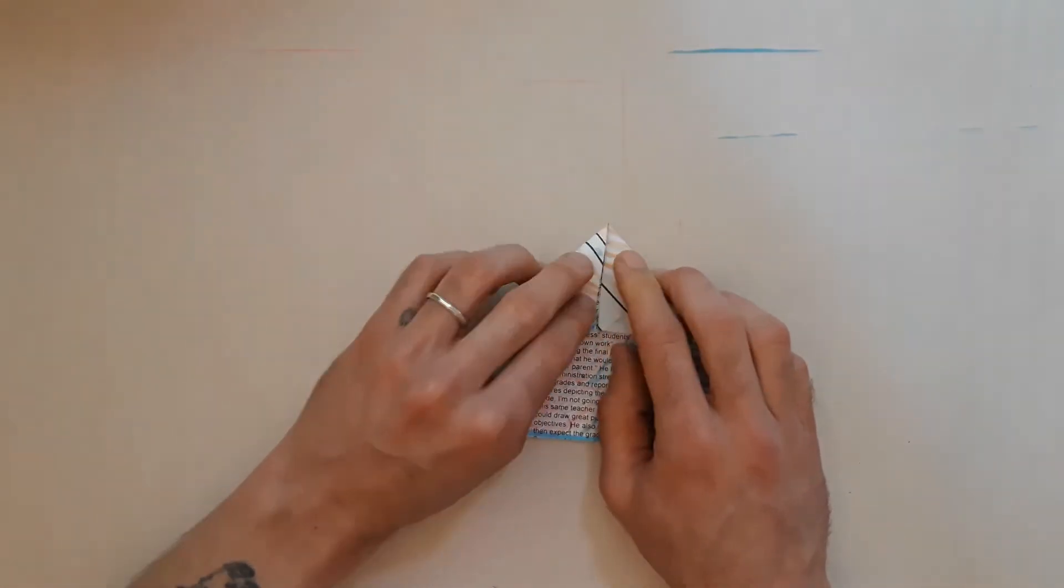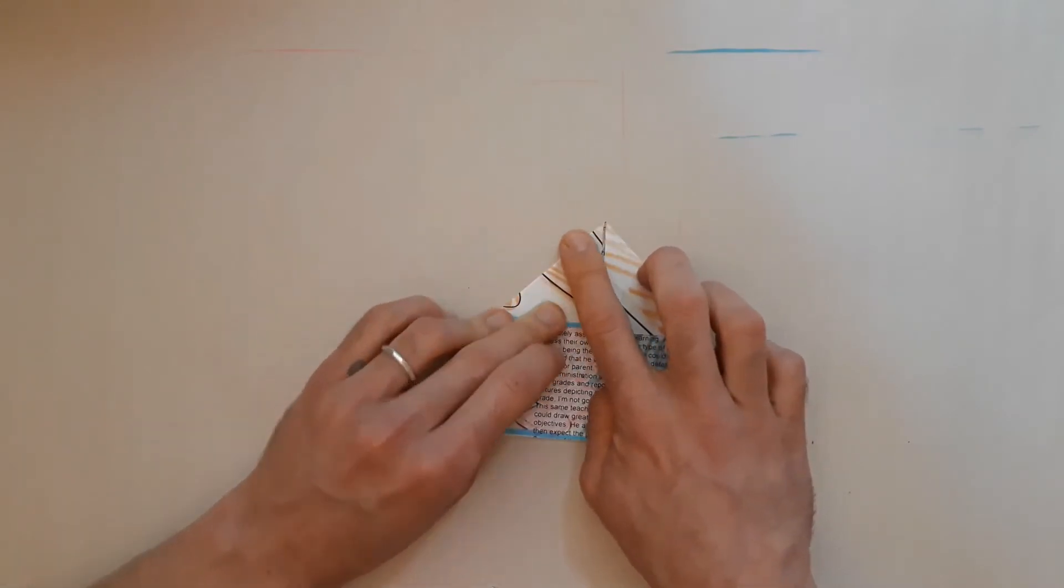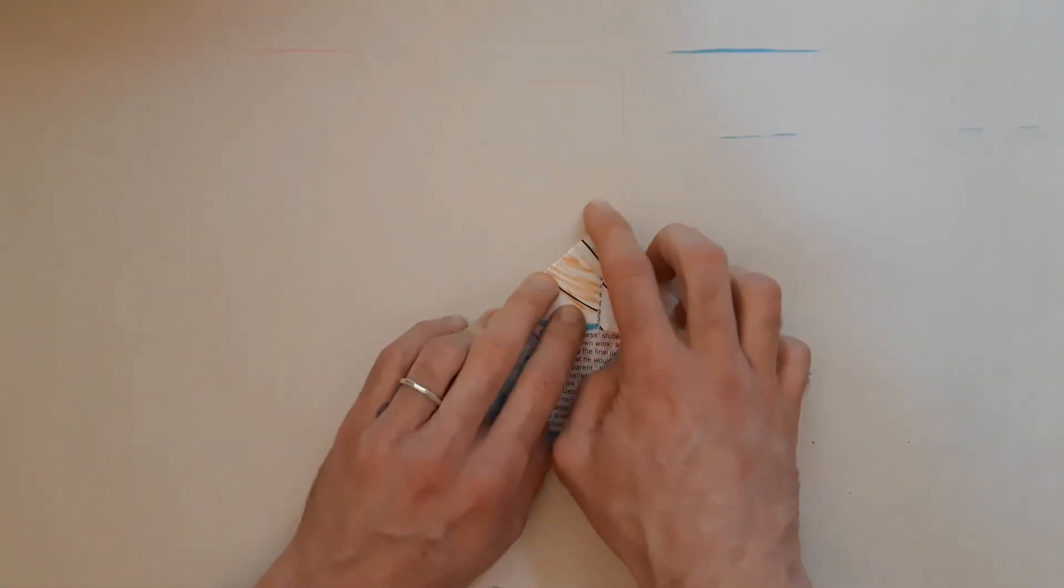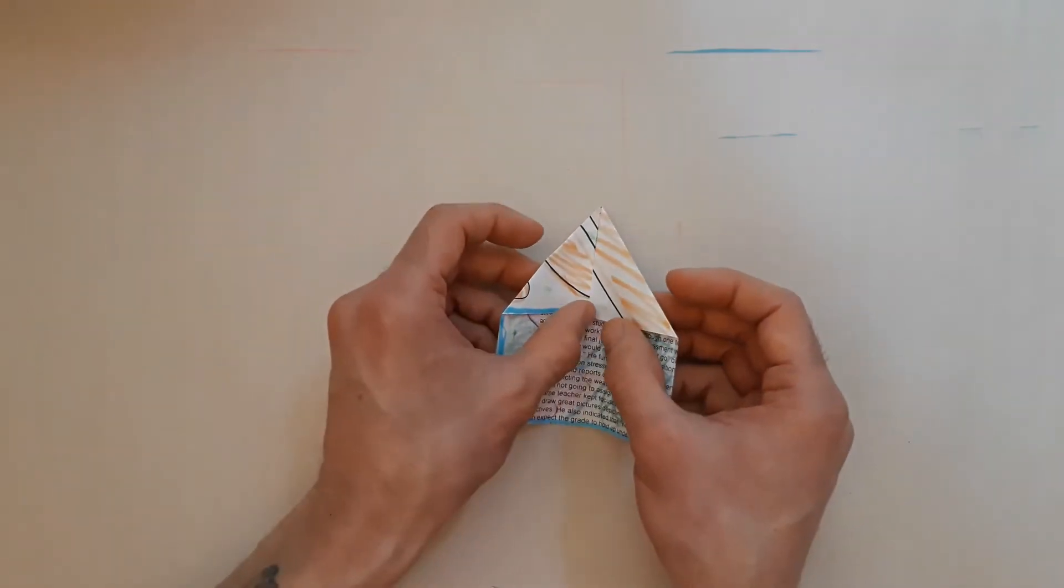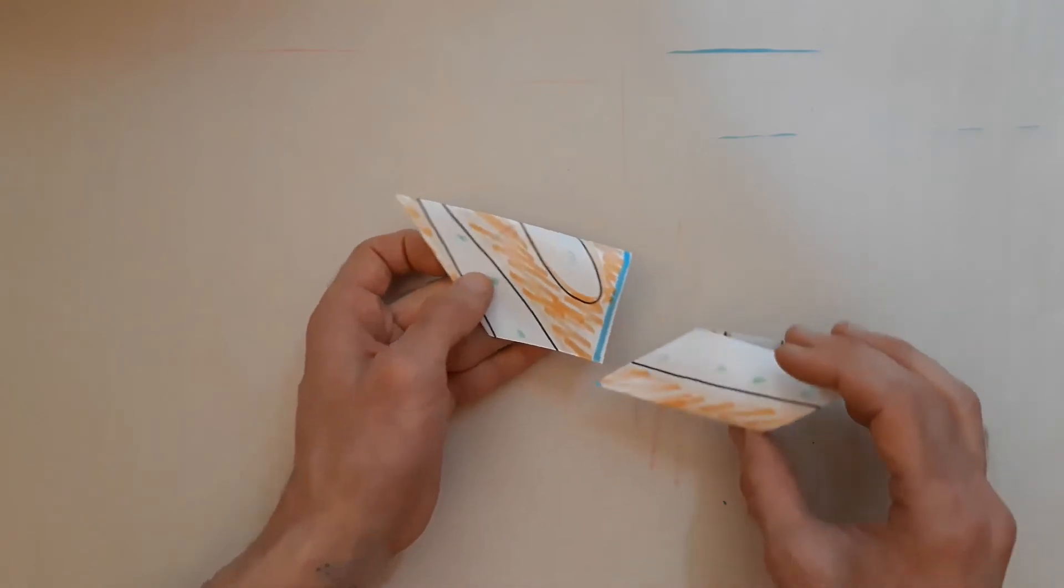Then fold those corners in and fold it around. That way we'll make sure that we have two that match for every pattern that I made. Now fold these in. Now this has the same pattern.